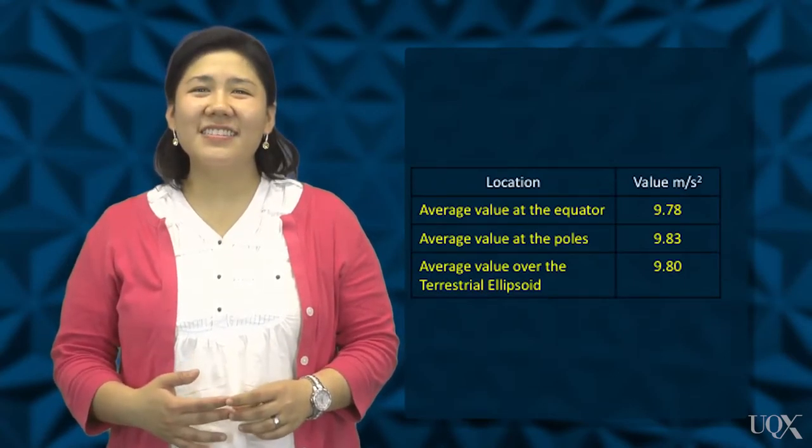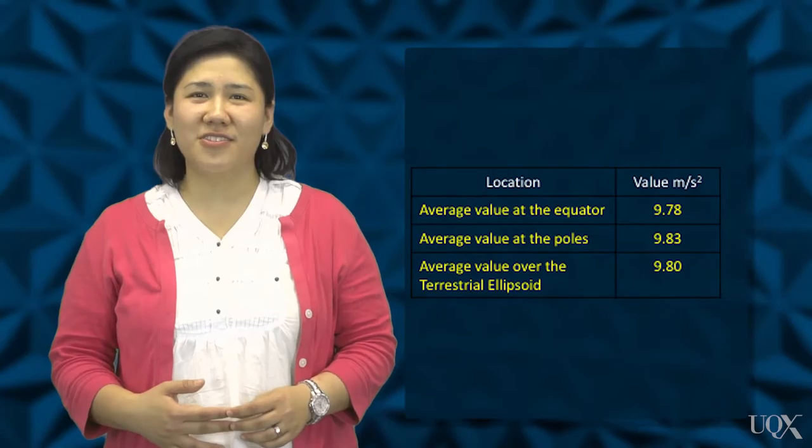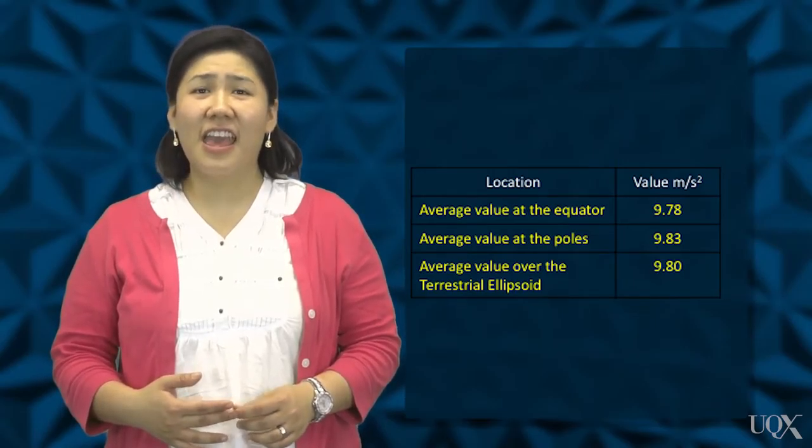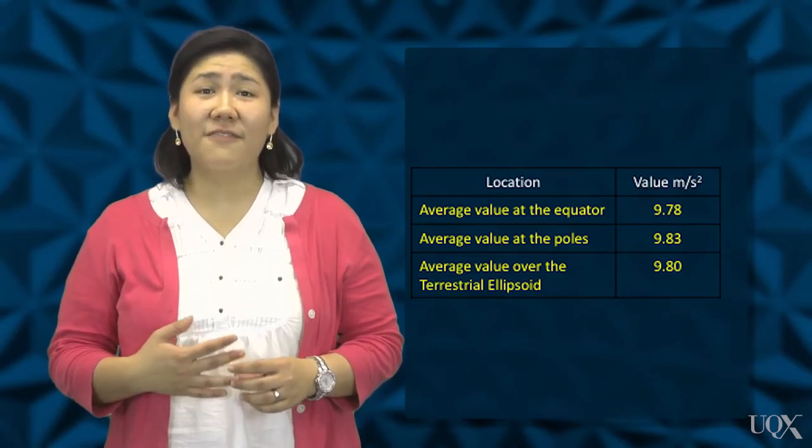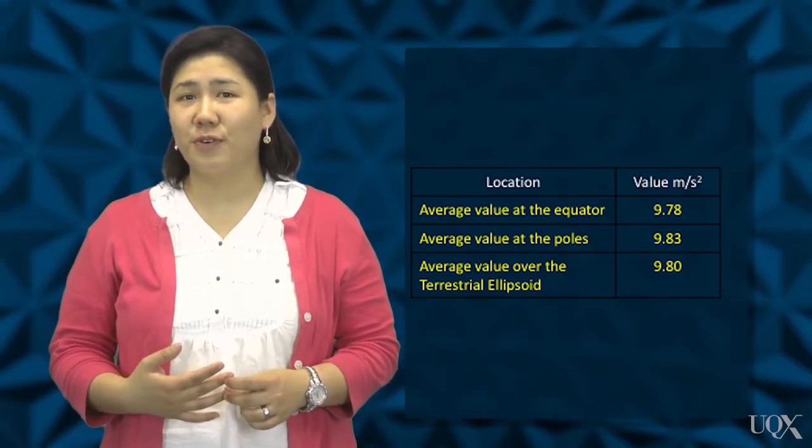The values that follow were taken from the CRC Handbook of Chemistry and Physics, the 75th edition, and illustrate the variability of the value. As expected, the value is lower at the equator due to the centripetal force.